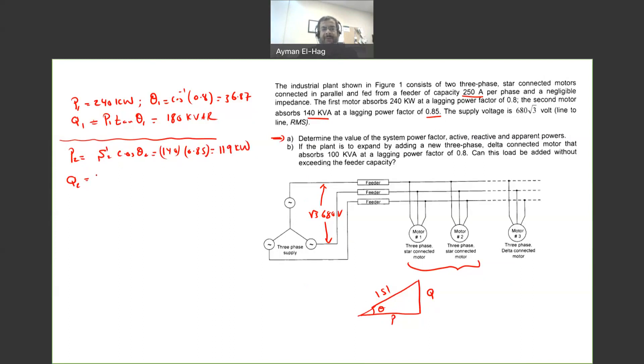Now we can find Q2, which is S2 sine theta 2. So we need to find theta 2. Now our theta 2 is cosine inverse of 0.85, and we can find the angle from this, which is 31.7.